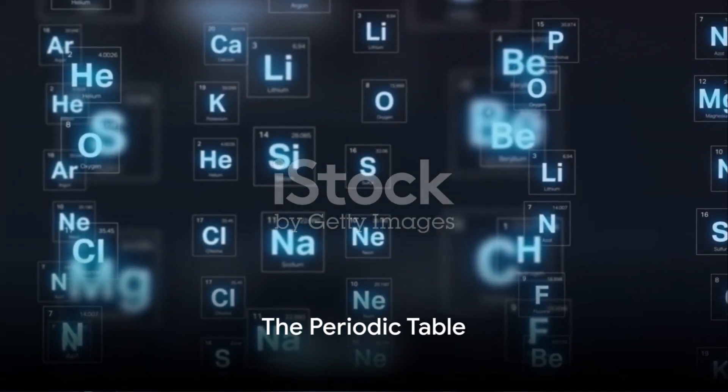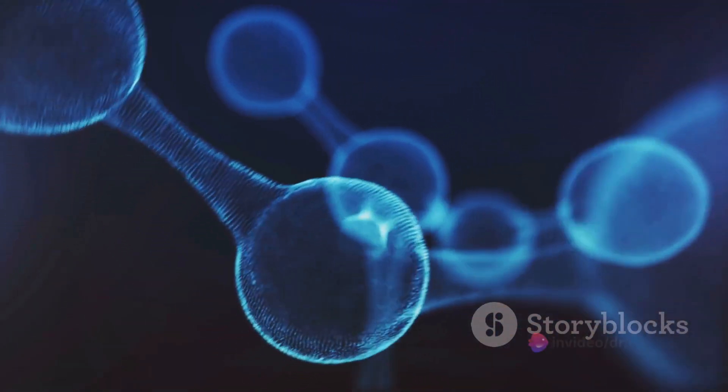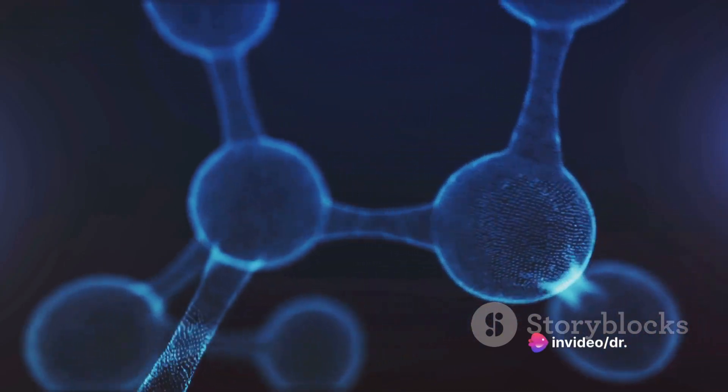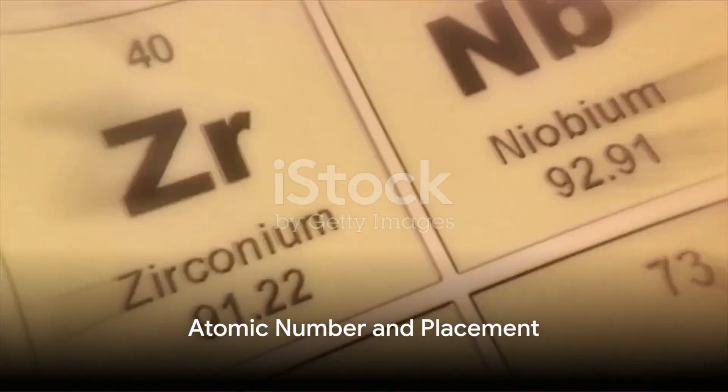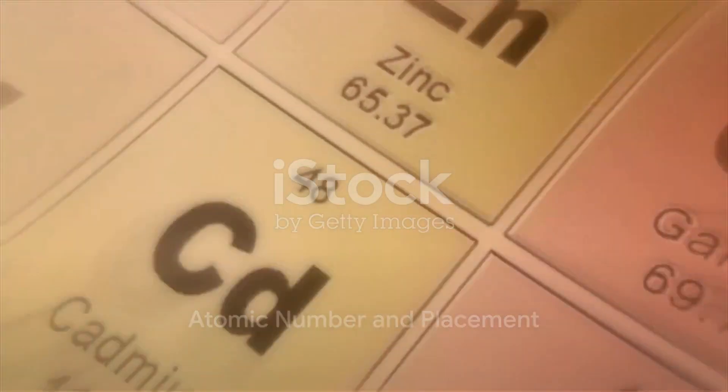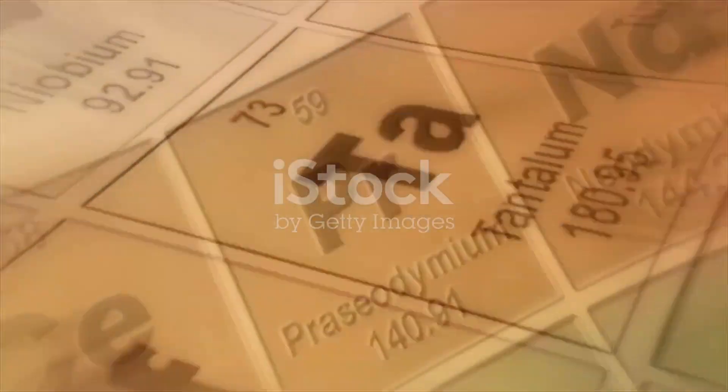Now, you may wonder, how do we know which atom is which? That's where the periodic table comes in. This table is a map of all the known elements, and each element is made up of a unique type of atom. The atomic number of an atom—the number of protons in its nucleus—determines its place on the periodic table.